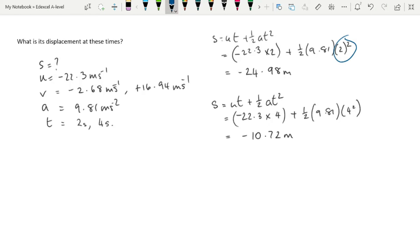At 4 seconds, it's minus 10.72 meters, so it's actually closer to the hand than at 2 seconds, which confirms what we said about the motion earlier. The velocity at 4 seconds is now positive, so it's done its reversal of direction at the top and is on its way back down.